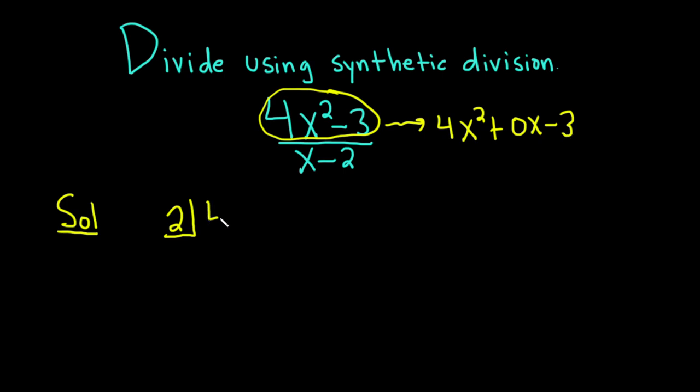The coefficients would be 4, 0, and minus 3. So you write the coefficients of the numerator here, and then you switch the sign on this number and put the little bracket. You draw a line.